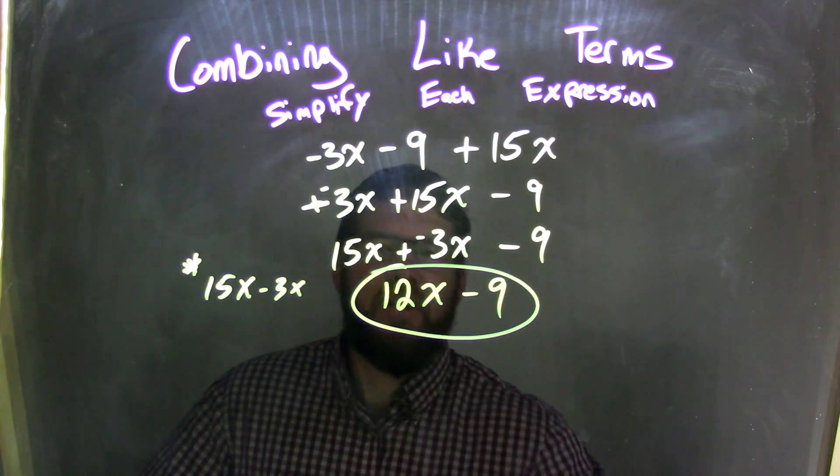Seeing that also 15x plus negative 3x is the same thing as 15x minus 3x, right? That's what we did here. We got that 12x in case you missed it. And so our final answer here is 12x minus 9. I'm bringing that 9 down the whole way.